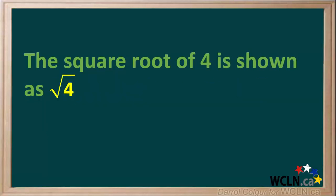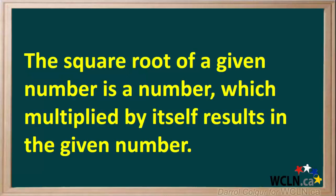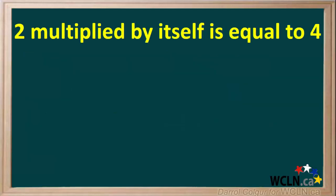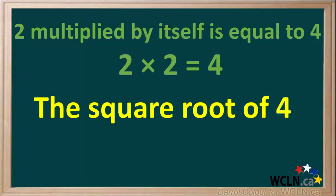So the square root of 4 is shown like this. As we said, the square root of a given number is a number which multiplied by itself results in the given number. 2 multiplied by itself is equal to 4. So the square root of 4, shown like this, is equal to 2.